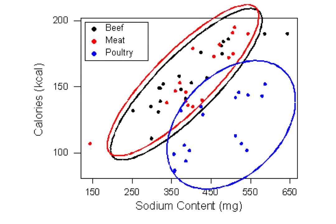In addition, we can see that hot dogs made of poultry, indicated in blue, are generally lower in calories. This is a result we have seen before.